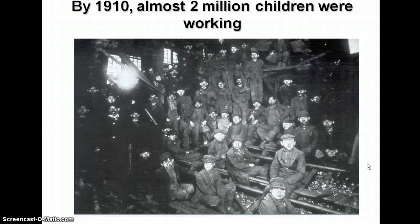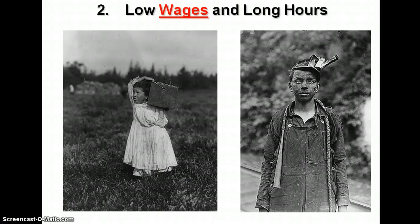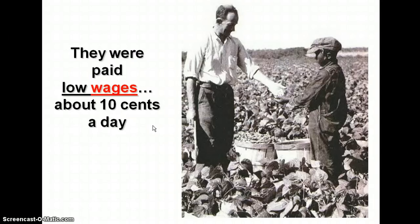By 1910, around the time of the Triangle Shirtwaist Factory fire, almost two million children were working, most of the time in horrible conditions. The children — and a lot of industrial workers — had low wages and long hours. Some were paid as little as 10 cents a day, and of course they missed school. School gives you the opportunity to rise up and make something better out of your life. Just ask Yannick.